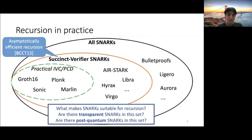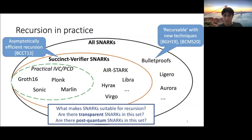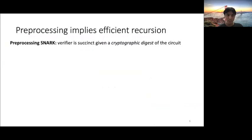Now, at this point, I do also want to note that with new techniques that came out very recently, like Halo, you can recurse bulletproofs and get PCD, but this does not have a succinct verifier. I'm not going to spend any more time on that in this talk, but we do want to know what it is that made PCD practical for these succinct verifier SNARKs. And we identify what it is as preprocessing.